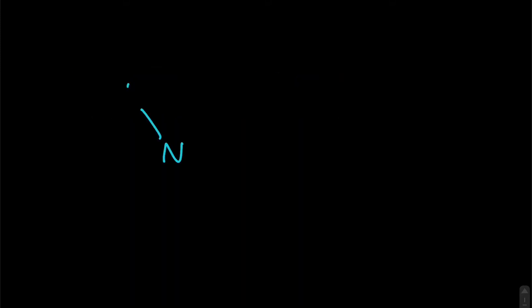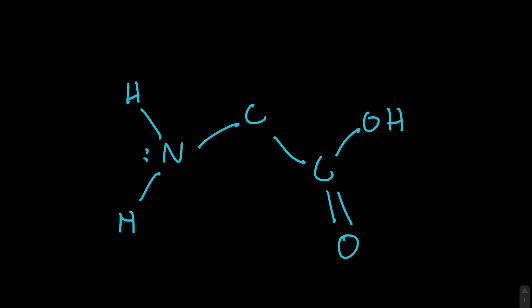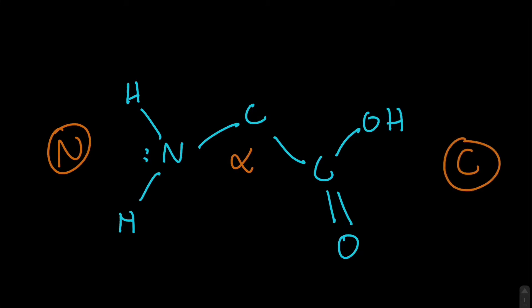The amino acid in its simplest form has a nitrogen-carbon-carbon backbone. One end is the amino terminus, named for its amine group, the middle carbon is called the alpha carbon, and the other end is the C-terminus, named for its carboxyl group. Coming off of the alpha carbon is a hydrogen and an R group.